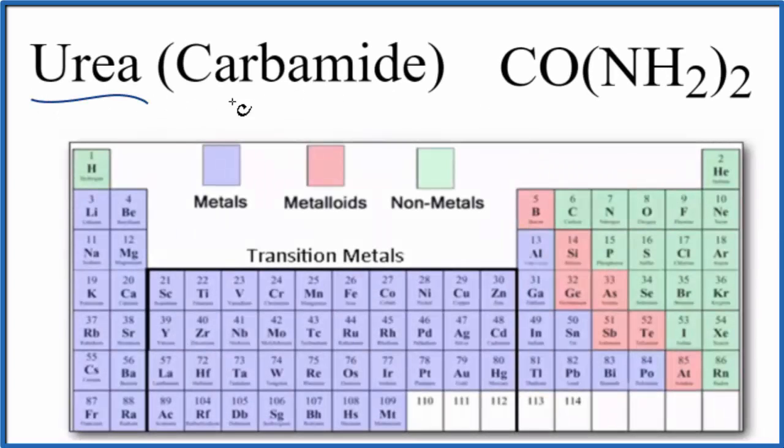So the question is whether urea, also called carbamide, is ionic or covalent. Here we have the formula CO(NH2)2. The short answer is that urea is a covalent compound. It's made up of covalent bonds.